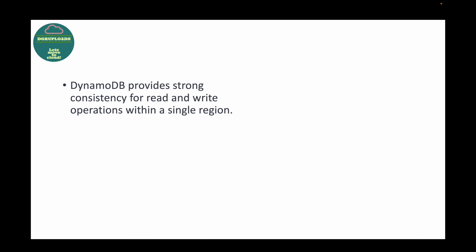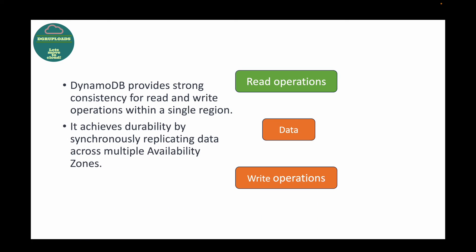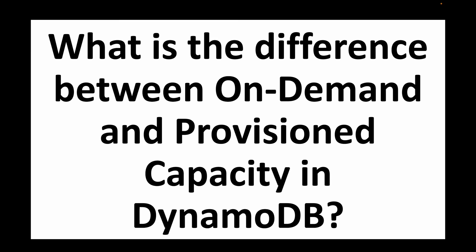The next question is: how does DynamoDB handle the consistency and durability of your data? DynamoDB provides strong consistency reads for read and write operations within a single region. By default, DynamoDB automatically replicates your data across multiple availability zones, achieving high availability and durability. Strong consistency is achieved by synchronously replicating data across multiple availability zones, ensuring your read and write operations always reflect the latest data.